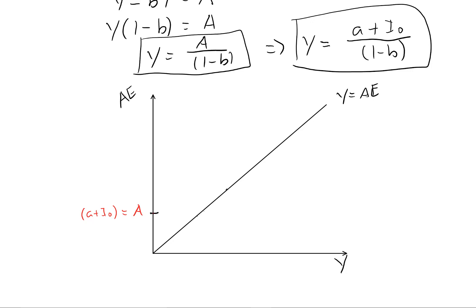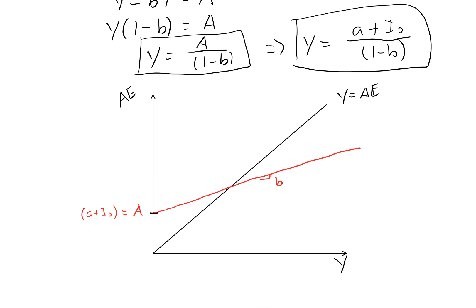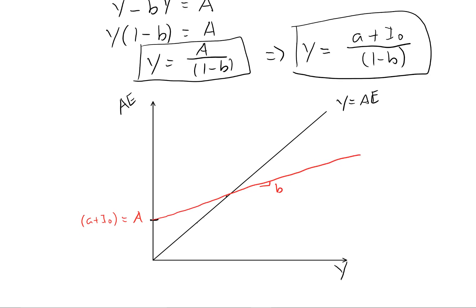And then we have a slope that's determined by, in this case, simply the marginal propensity to consume. So B, because B is the only thing that's affecting the slope of this function. And this is our AE function.